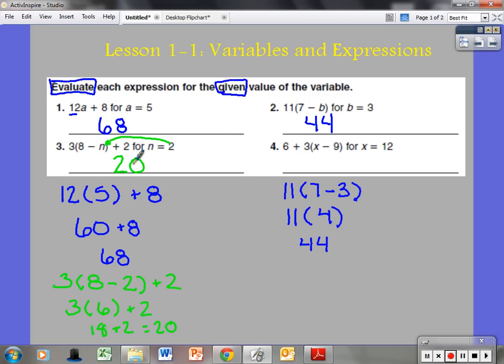Let's do one more here. 6 plus 3 times x minus 9, close parentheses for x equals 12. Let's do a little substitution here. I now know what x equals, it is 12. I now say 6 plus 3 on the outside. But wait a minute, there's that parentheses, so that means multiplication first. So before I ever add, I have to do some multiplication here. The x is equal to 12, so I substitute that in. 12 minus 9.